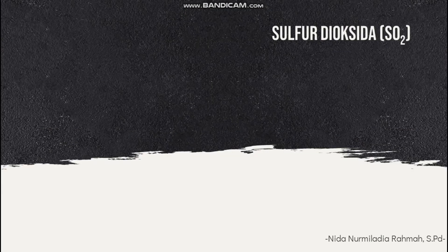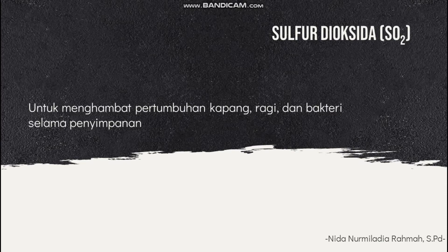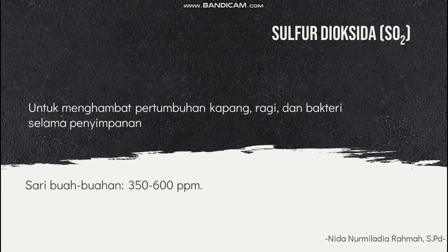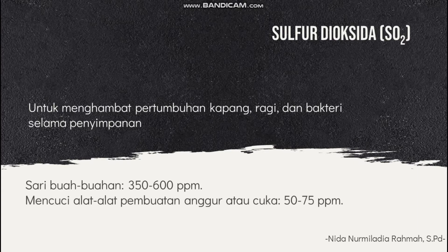Selanjutnya sulfur dioksida (SO2). Sari buah-buahan atau makanan lain yang bersifat asam (pH rendah) bisa diawetkan dengan cara menambahkan SO2. Jumlah sulfur dioksida yang digunakan untuk sari buah-buahan itu sebesar 350 sampai 600 ppm. Sulfur dioksida juga bisa digunakan untuk mencuci alat-alat yang digunakan dalam pembuatan anggur atau cuka dengan kadar 50 sampai 75 ppm. Pemberian sulfur dioksida bertujuan untuk menghambat pertumbuhan kapang, ragi, dan bakteri selama penyimpanan.